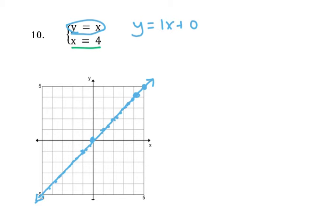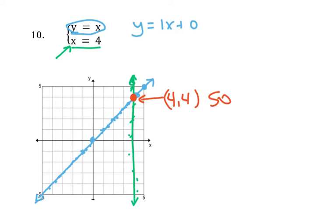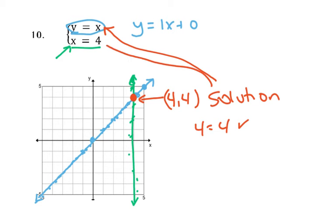Now let's take the second equation: x equals 4. That's going to be a vertical line, because there's no y, so it just goes through the x-axis at 4. All of the points on the green line are solutions to that equation. Where are they the same point? Where do they intersect? They intersect right here at the point (4, 4), and that means that that point is a solution to both equations. For y equals x: yes, that's true. For x equals 4: 4 equals 4, that's true too. There's no other point that would be a solution to both of these at the same time — the green line and the blue line will never intersect again.